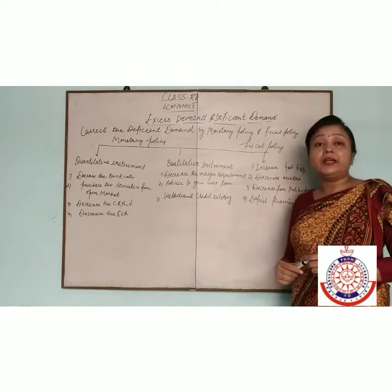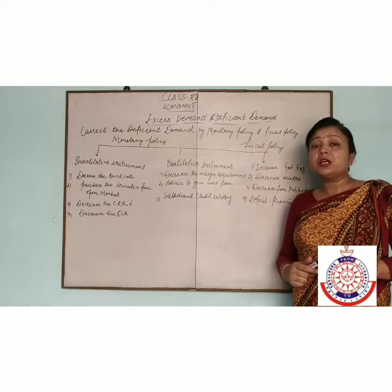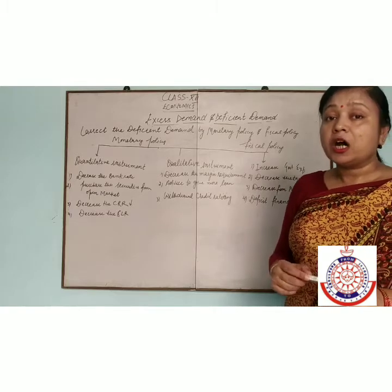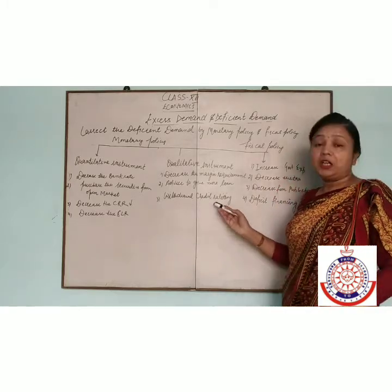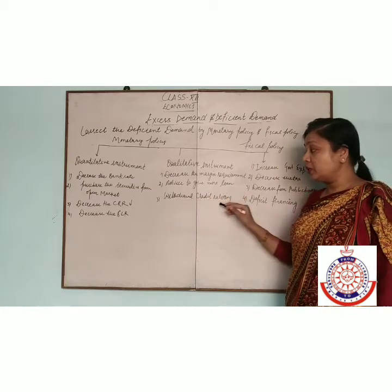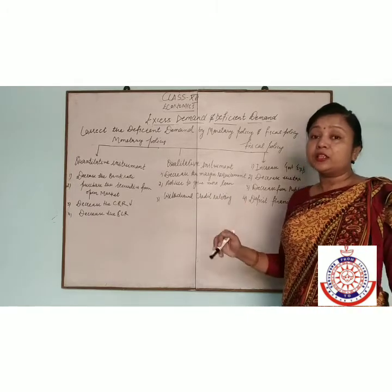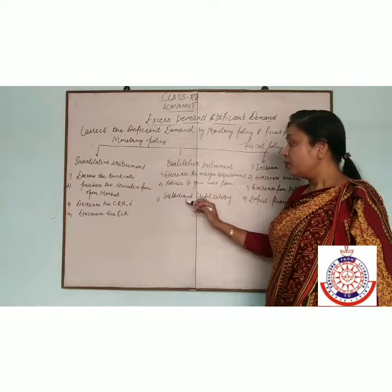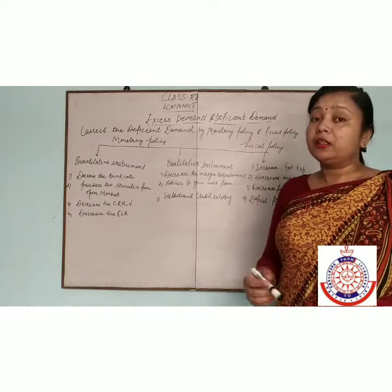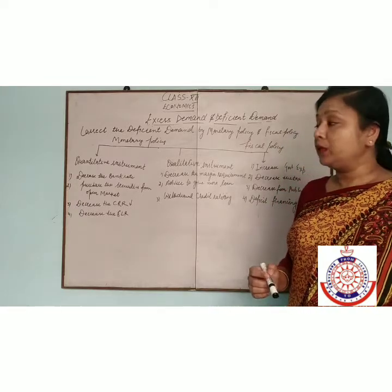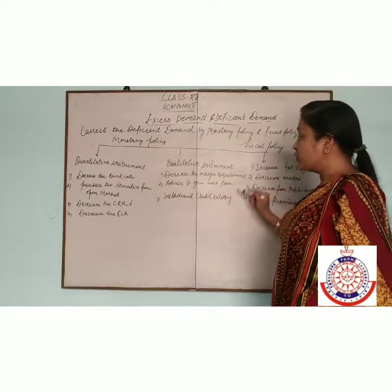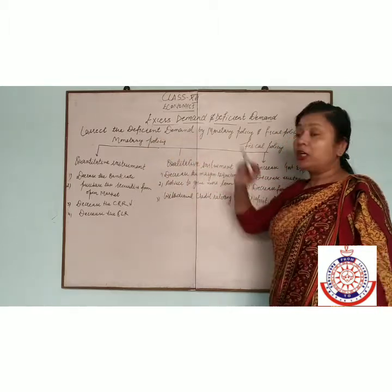Third is withdrawal of credit rationing. Withdrawal of credit rationing means the quotas fixed for different sectors on how much loan is to be provided are removed. Every sector is allowed to take loans from the commercial bank. If every sector takes a loan from the commercial bank, then the problem of deficit demand will be removed. These are the quantitative and qualitative instruments which solve the problem of deficit demand.